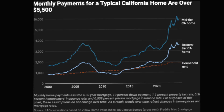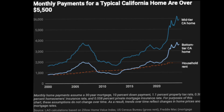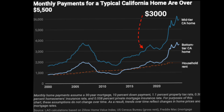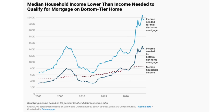In California, for example, a typical mid-tier home would cost someone around $5,900 per month given today's interest rates and a 10% down payment — up from around $3,000 a month in 2017. It's so bad in California that the median household income doesn't even come close to qualifying for a loan to purchase a bottom-tier house, let alone something a little nicer. You actually need a household income that exceeds $235,000 to even begin to qualify for a mid-tier home.